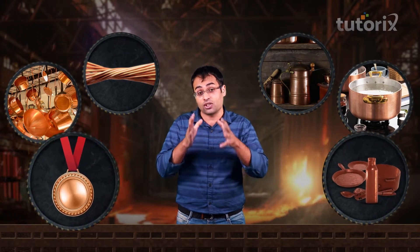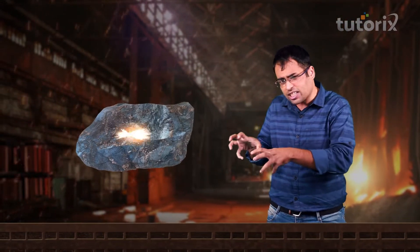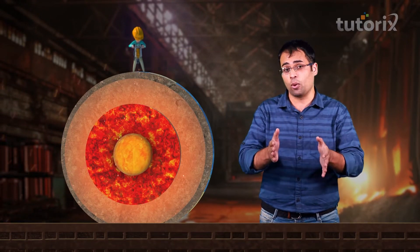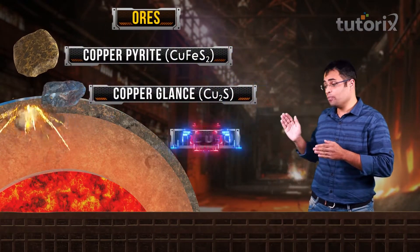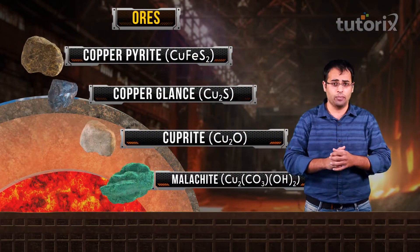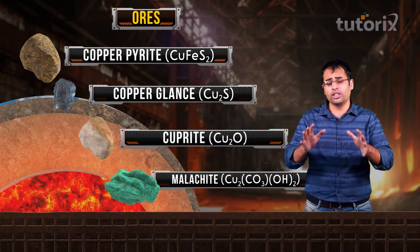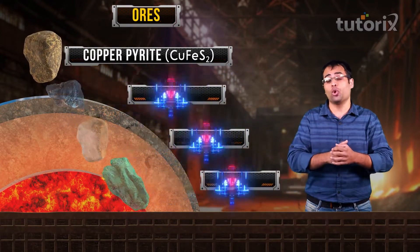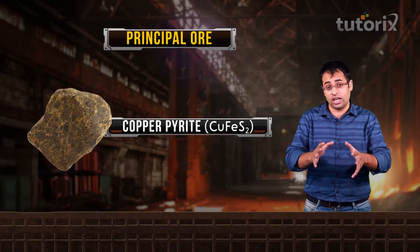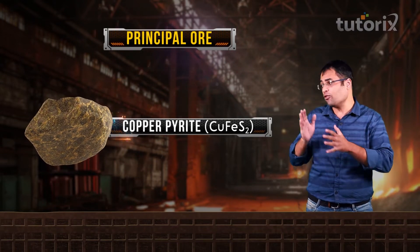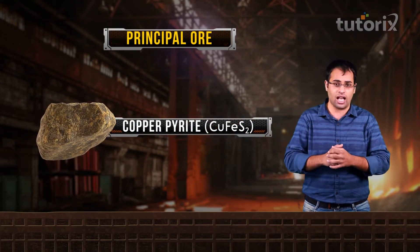It is very important to learn how to extract copper from its ores. Now copper is present in the earth's crust in the form of its ores, which mainly are copper pyrite, copper glance, cuprite and malachite. However, the principal or the most common ore of copper is copper pyrite. And we will learn the extraction of copper only from copper pyrite in today's class.